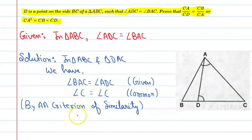These two triangles are similar. We can say triangle ABC is similar to triangle DAC.